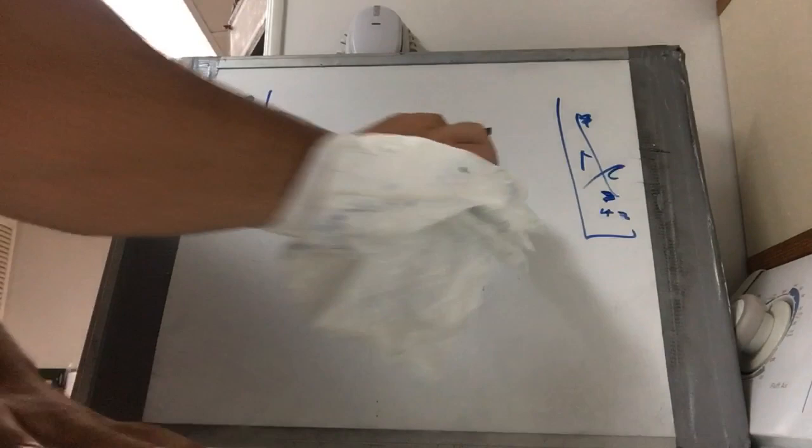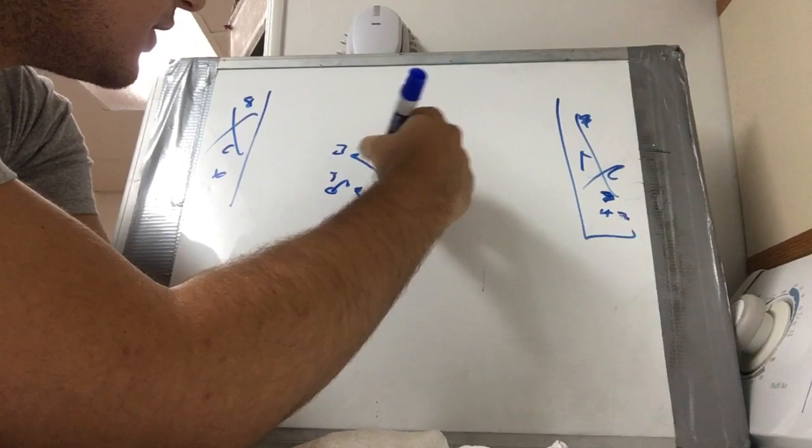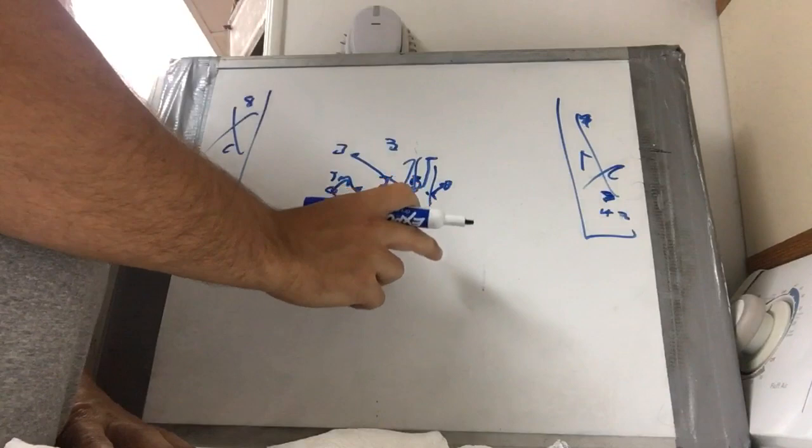That 9-tech, that C gap was unaccounted for. Against the 3-3 stack, say they walked that 9-tech down there, they gave up that C gap and you could just run the power right in there. With a dart, trap, counter, whatever you want to call it.